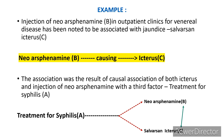A practical example: initially it was thought that the neo-arsphenamine drug was causing icterus. Injection of neo-arsphenamine in outpatient clinics for venereal disease was noted to be associated with jaundice or icterus. But the association between the drug and icterus was actually non-causal, because it resulted from the causal association of both icterus and injection of neo-arsphenamine with a third factor: treatment for syphilis. Treatment of syphilis is causally associated with neo-arsphenamine, and also causally associated with icterus, but the drug itself is not causing icterus.